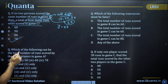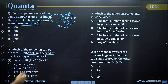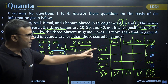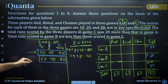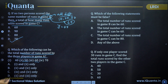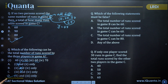Next question: which of the following can be the total number of runs scored by the three players in game A? Game A is X, which is either 50 or 60. So the answer includes both 50 and 60 — that is option D, second and third choices combined.